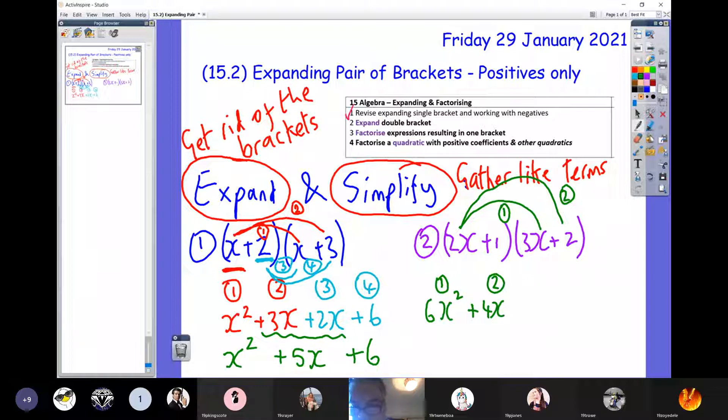We've done claws number one and two. Let's move over to claws three and four. Claw three is going from the one to the 3x, and claw four is going from one to the two. Claw three: one times 3x is just one lot of 3x, which is plus 3x. And one times two is just plus two.